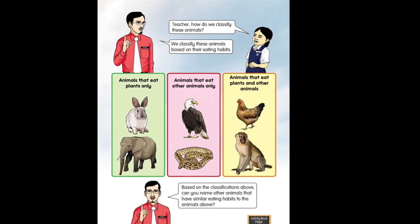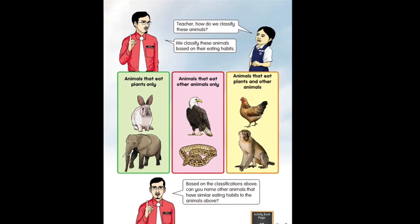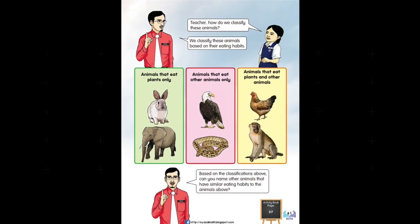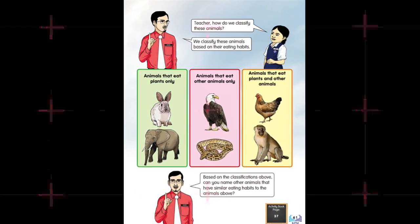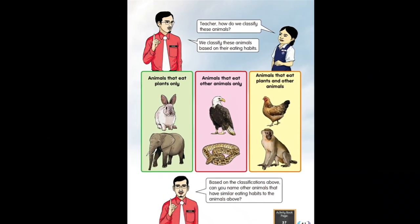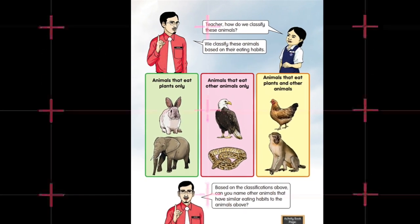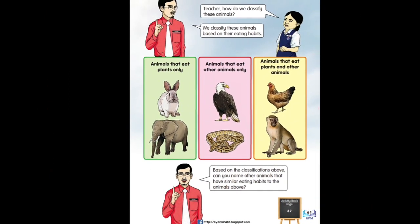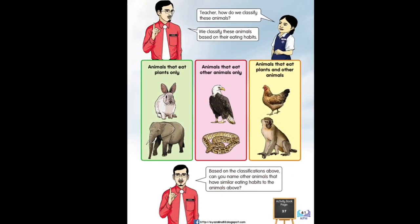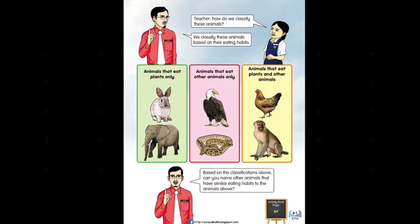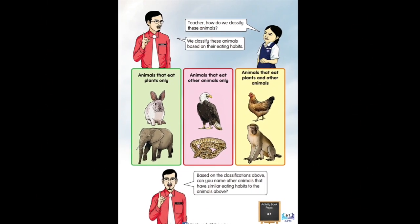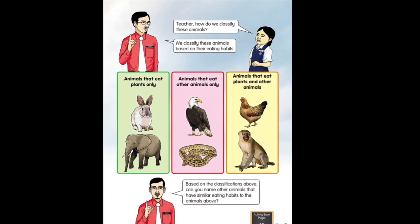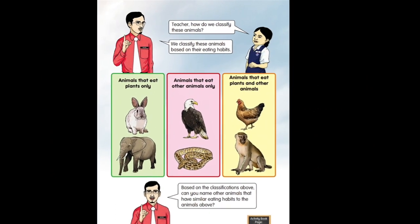In the red brackets, animals that eat other animals — which is eagle and snake. And the animals that eat plants and other animals, meaning these animals eat plants together with other animals, such as chicken, hens, or monkey. Based on the classifications above, can you name other animals that have similar eating habits to the animals above? Try it out — I'll give you one minute.